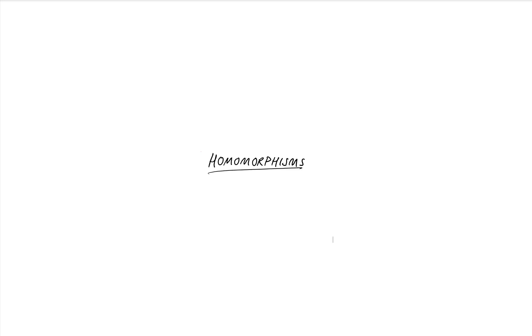Kia ora and welcome back. In this video we're going to start looking at a special kind of mapping called a homomorphism. We've met something similar when we studied isomorphisms, but homomorphisms, even though in some ways they're quite similar, serve quite a different purpose. It's a tool that lets us probe how a group behaves by breaking it down into higher level behavior.